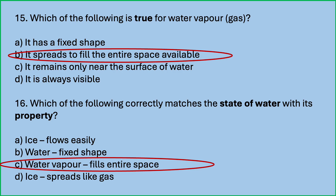Ice does not flow easily and will not spread. Water has no fixed shape. The fourth option — ice spreads like gas — is also wrong. Ice does not flow or spread.